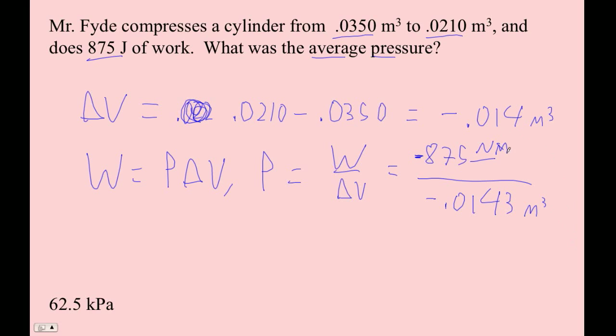And of course, meters will go away, and one of those will go away, and you get newtons per meter squared. So 875 divided by 0.014 is 62500 pascals, and then the answer is in kilopascals. So how do we do that? Divide by 1,000. So 1, 2, 3 kilopascals.